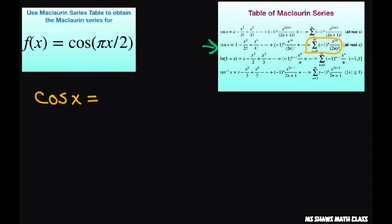That's going to be the sum from n equals 0 to infinity of negative 1 to the power of n times x to the power of 2n divided by 2n factorial.